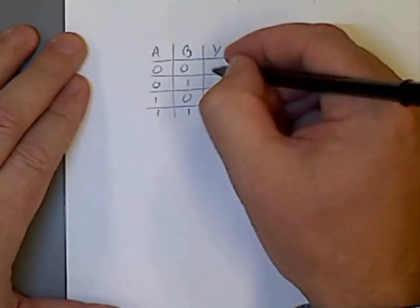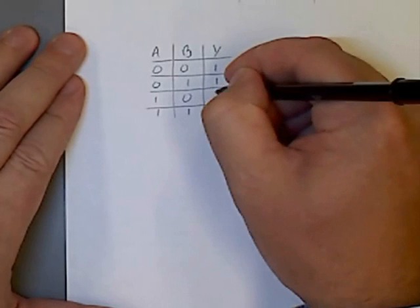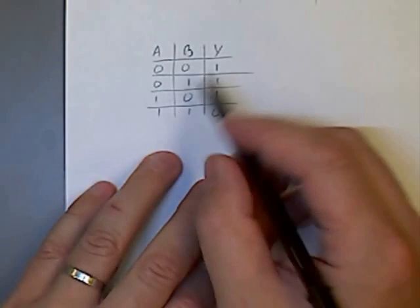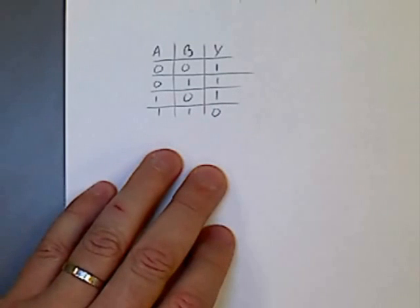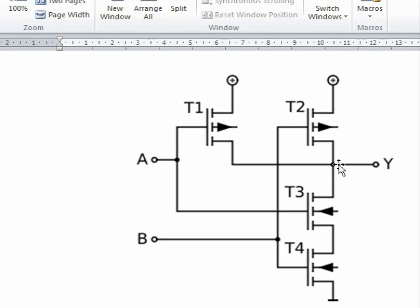And in the output here, we've got 1, 1, 1, 0. If our four transistors are wired as such, so we've got our complementary transistors, so we've got our P-types up here and our N-types down here, and are connected in such a way, then